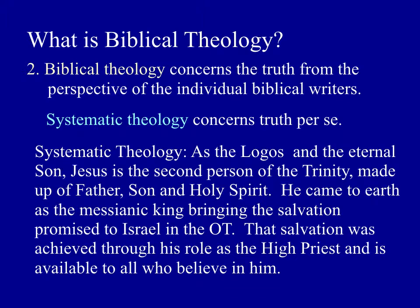Systematic theology then would bring these together and give us a complete picture of who Jesus is. Here's a statement of systematic theology: As the Logos and the Eternal Son, Jesus is the second person of the Trinity, made up of Father, Son, and Holy Spirit. He came to earth as the messianic king, bringing the salvation promised to Israel in the Old Testament. That salvation was achieved through his role as the high priest offering a sacrifice for sins, and it is now available to all who believe in him. That's systematic theology — taking Christological emphases of individual authors and bringing them together into a more global, complete statement.